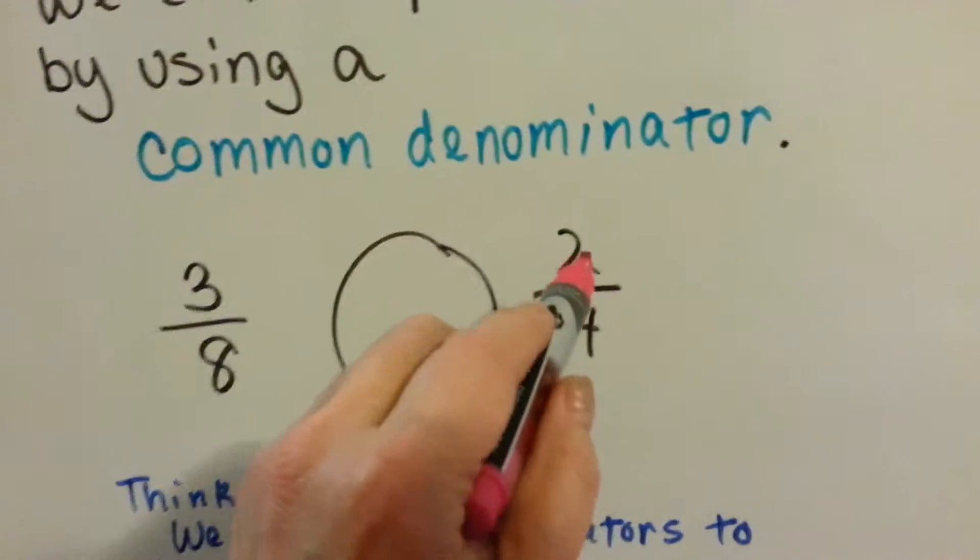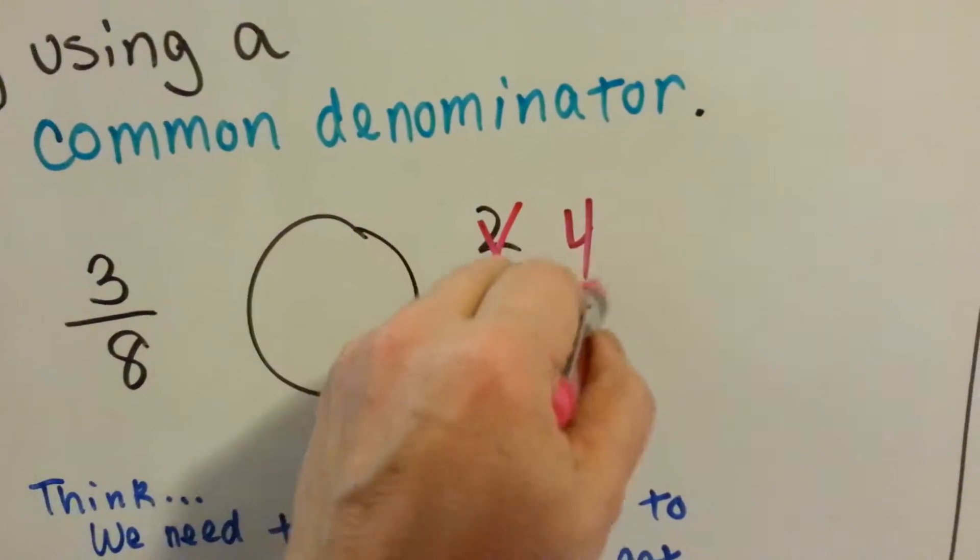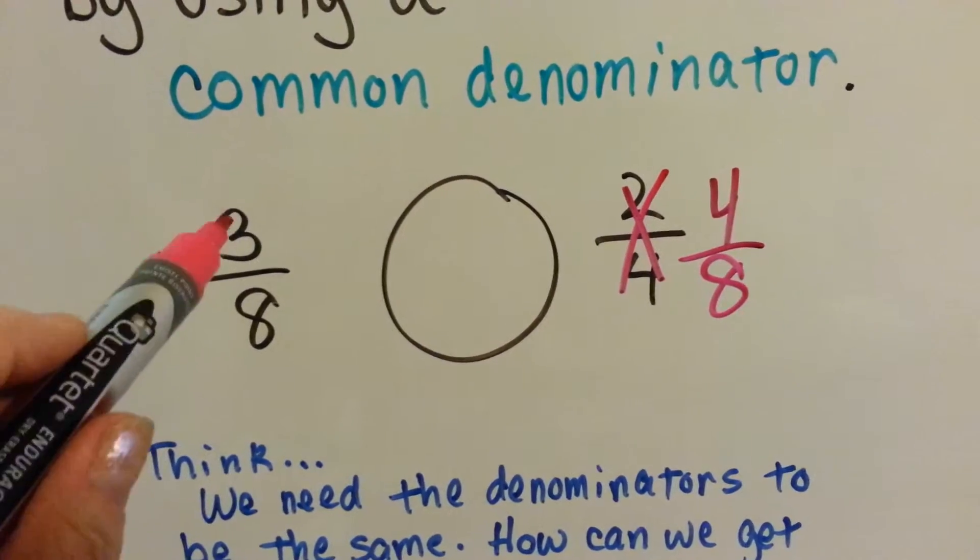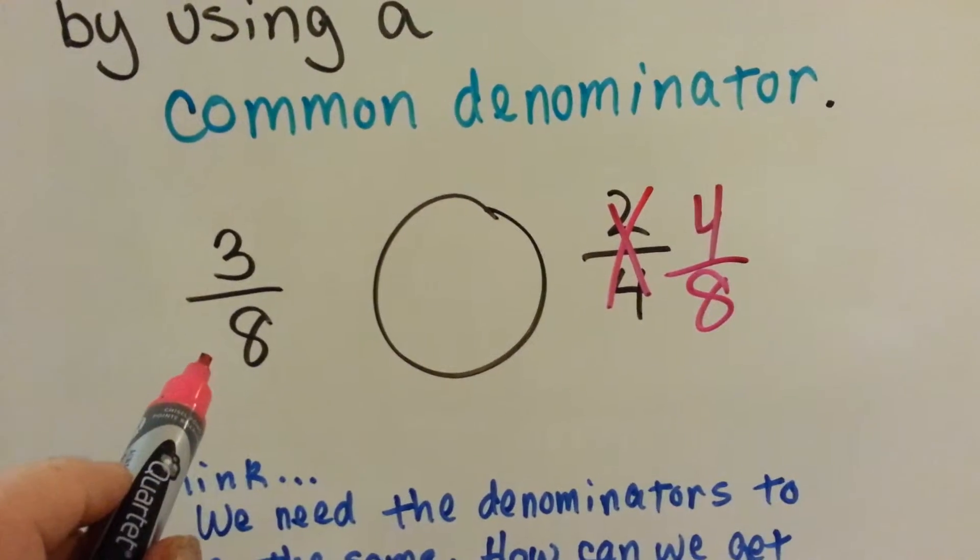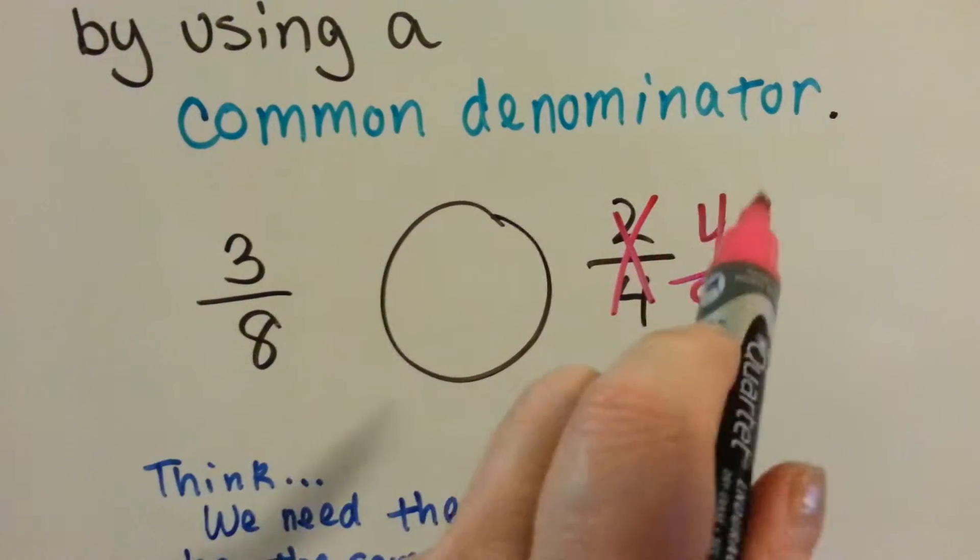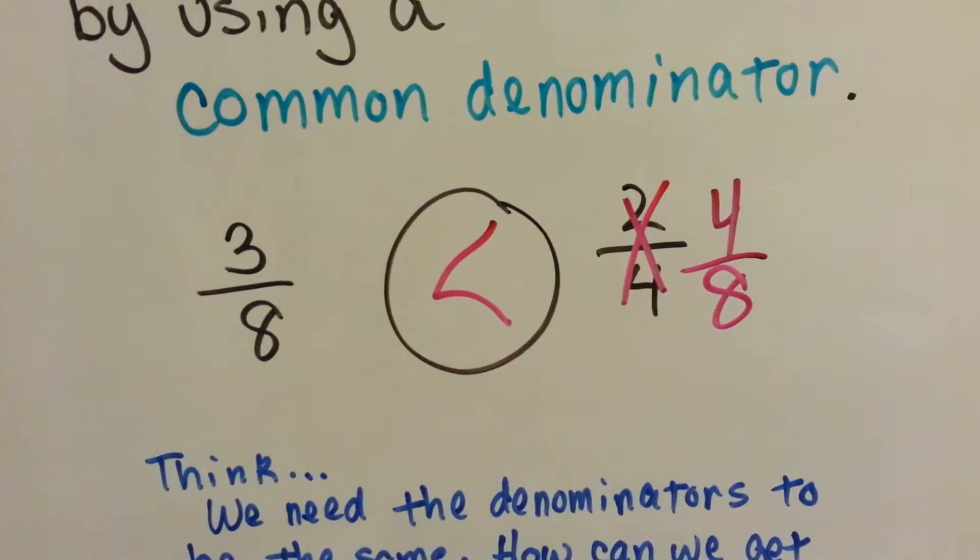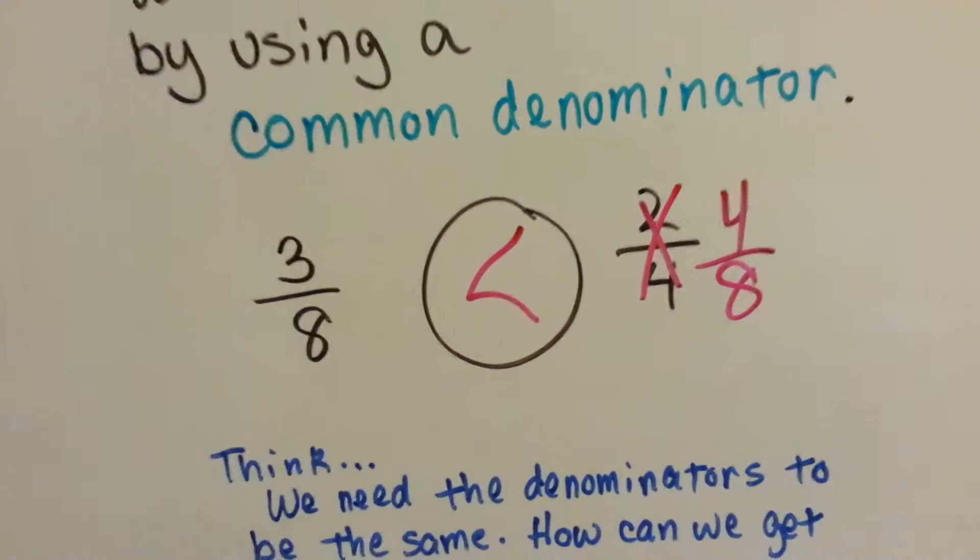So if this is not 2 fourths, if this is 4 eighths, can you tell me which one's bigger? The denominators are the same. Is 3 bigger than 4? No way. So we know that 2 fourths is larger than 3 eighths.